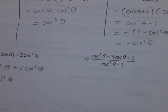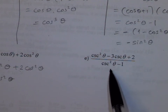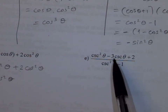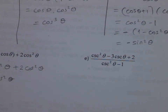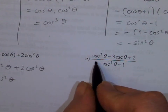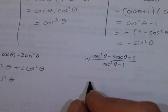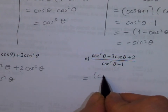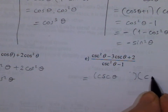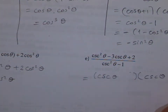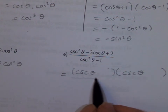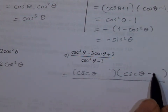For the next problem, you might think of replacing cosecant squared theta right away, but actually the numerator and denominator can both be factored first. Instead of replacing immediately, let's factor and simplify if possible. The numerator is like a trinomial — you get cosecant theta times cosecant theta, and we should put minus 2 and minus 1.